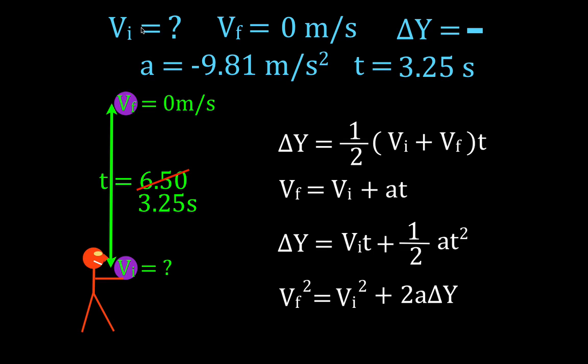Here are our four kinematic equations. The equation, because we're looking for the initial velocity, has to have the initial velocity. They all have the initial velocity. But the equation that we're going to use also has to have the other three variables that we know. We know the acceleration, the final velocity, and the time. We don't know the change in position.